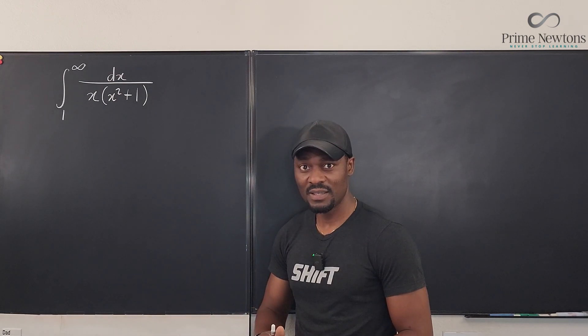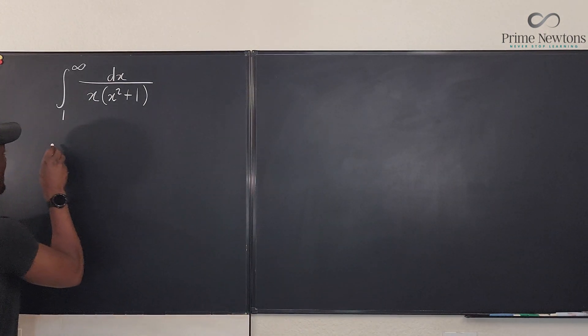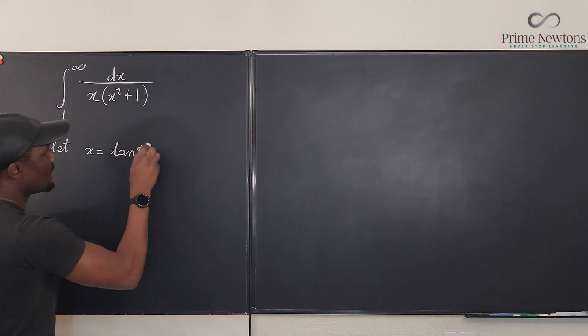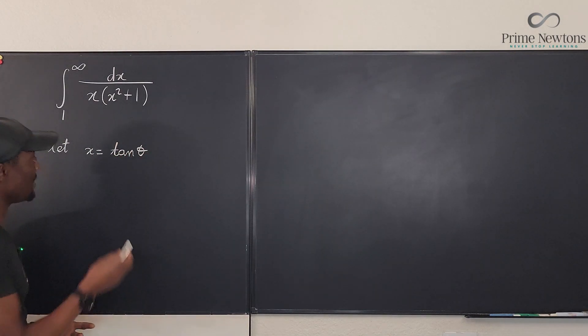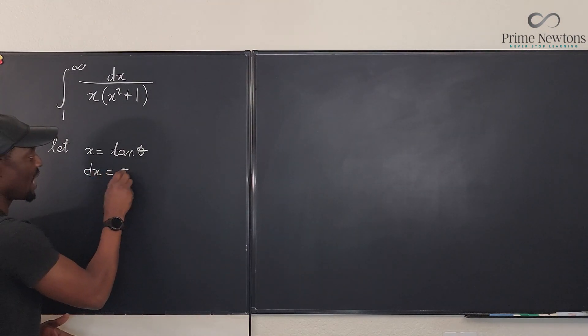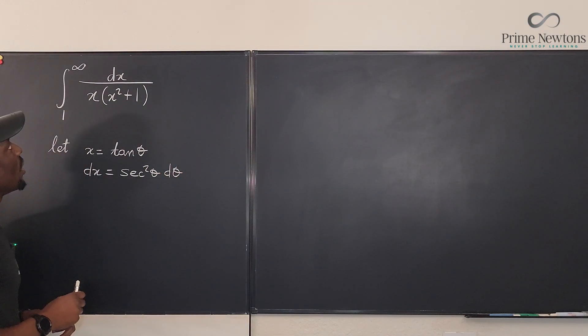Let's make x equal to tan θ. We're going to say that, let x be equal to tan θ. So we immediately find dx. We differentiate both sides. We're going to have secant squared θ dθ.